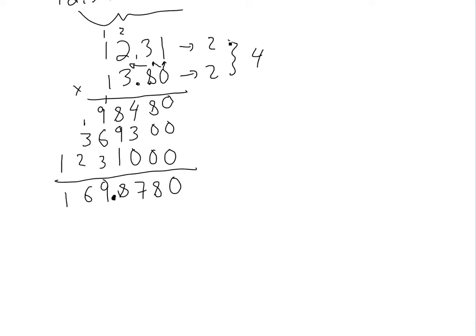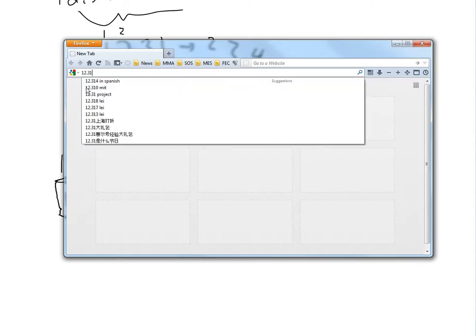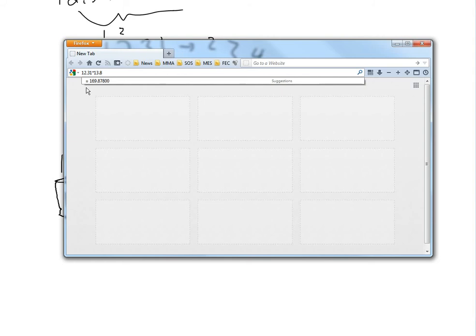So if each number had three decimal places, that would be six total. I'll show you why this is all correct. So this is the right answer — I'll check with a calculator. If you put it in a calculator, we get 12.31 times 13.8, and that equals 169.878. So yes, this is the correct answer.